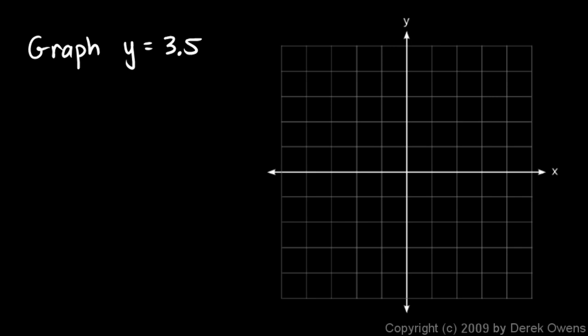Here we're told to graph the line y equals 3.5. The numbers don't have to be integers — 3.5 is the y value. So let's go up on the y-axis to 3.5: that's 1, 2, 3 and 4, so 3.5 will be right there. And this graph will be a horizontal line at that position.